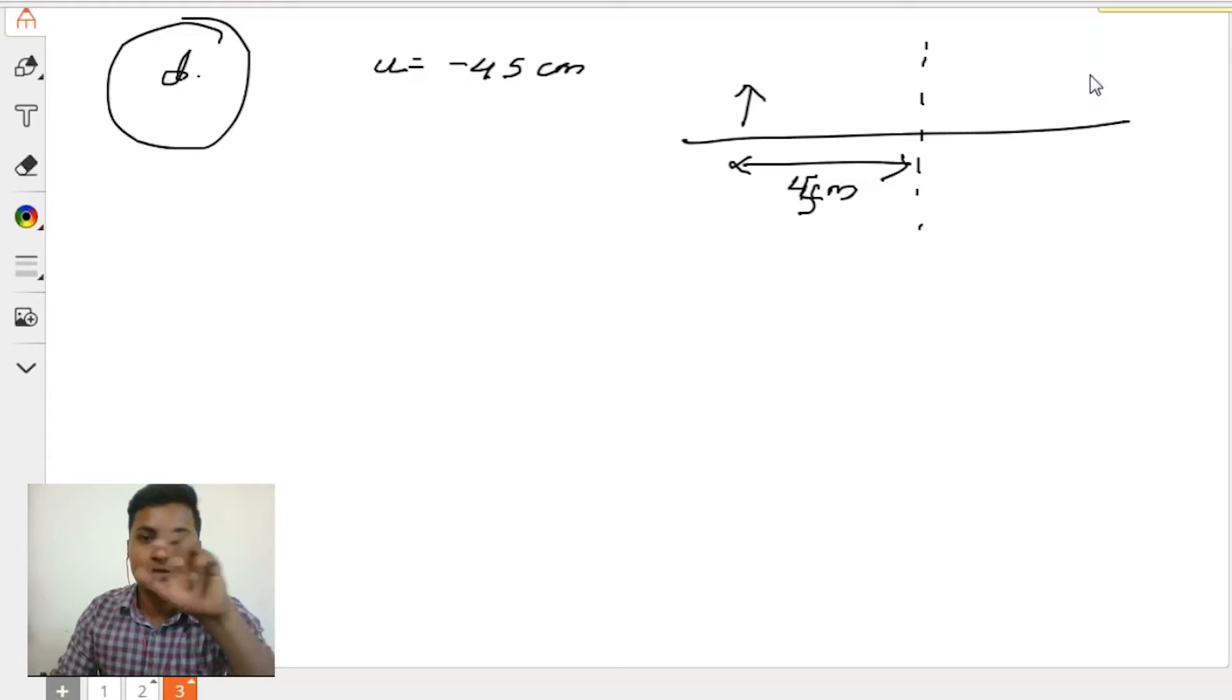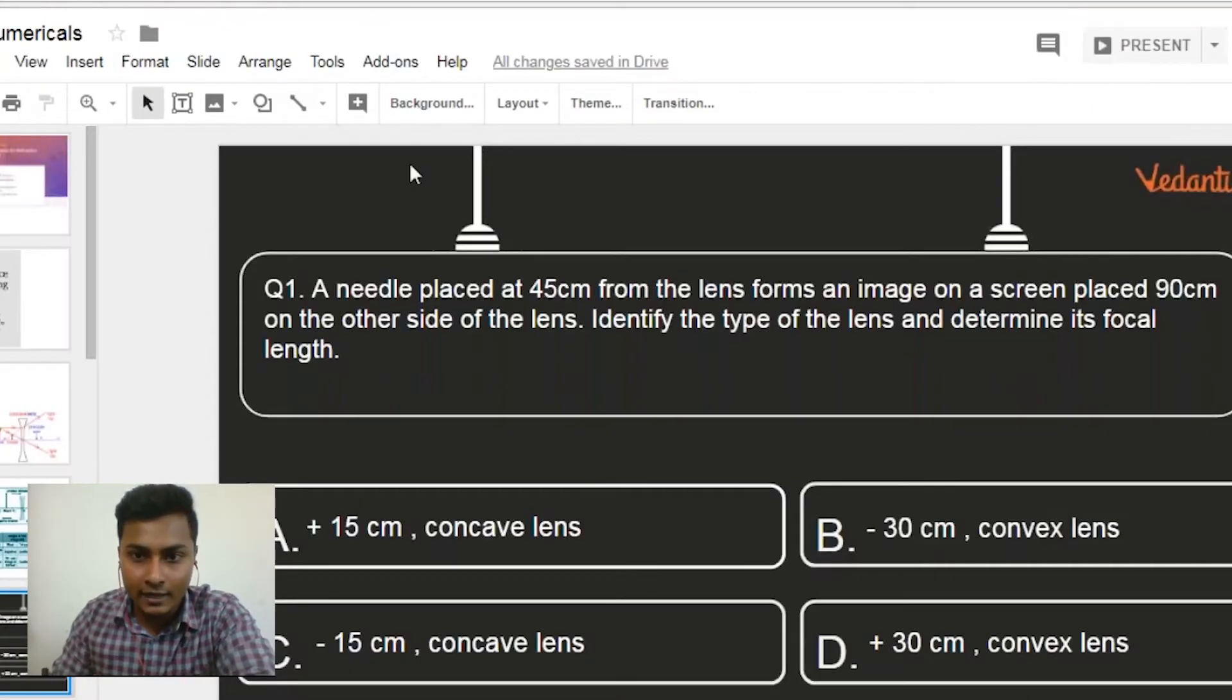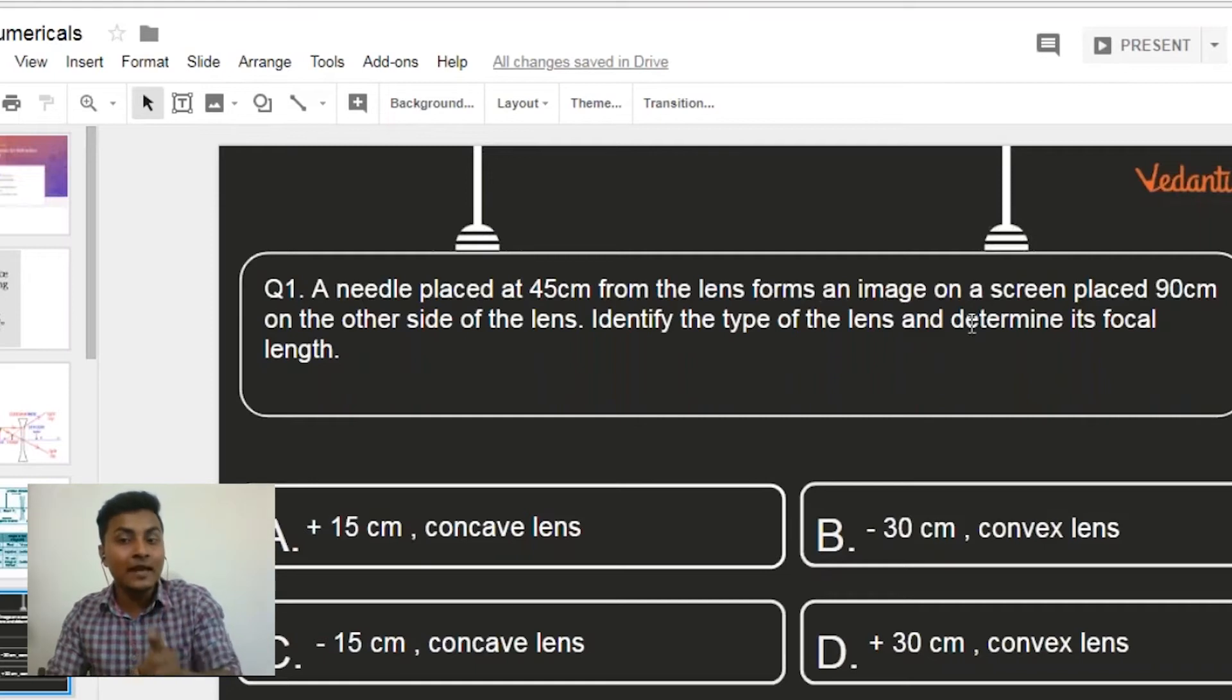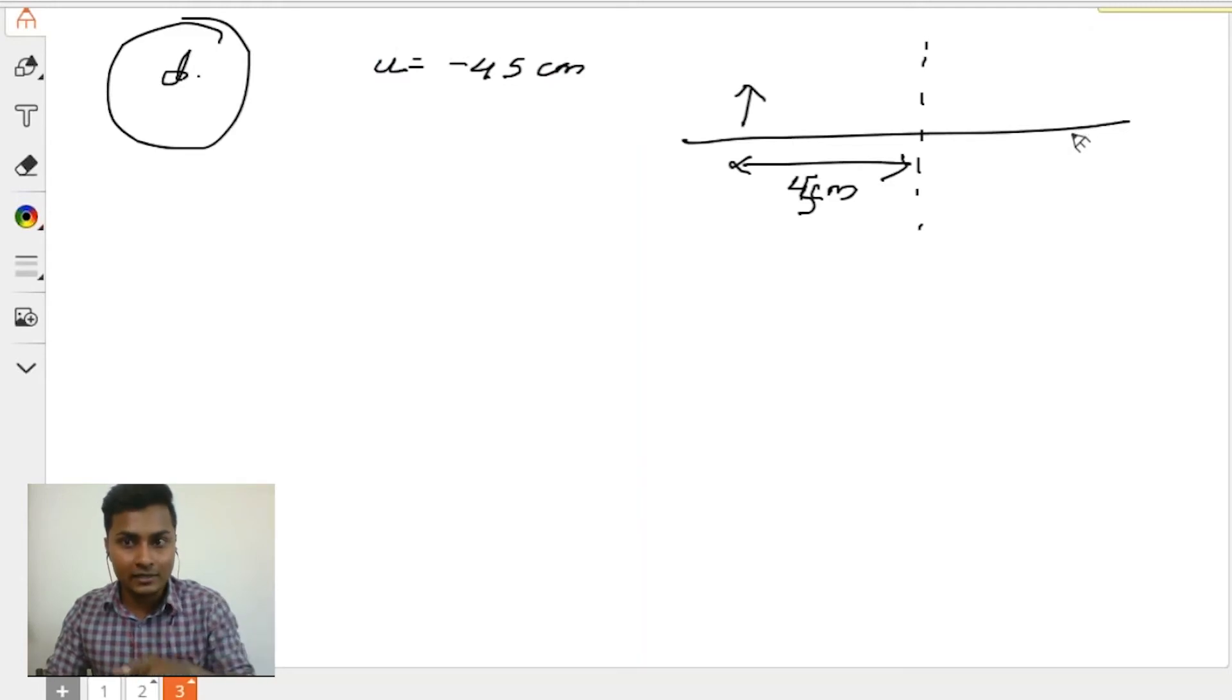What is the next profile given to you? It's stated a lens forms an image on a screen placed 90 centimeter on the other side of the lens. So that means it's going to form on the right hand side, here it is 90 centimeter. Now my question to you is, is there any scenario when I told you that a concave lens makes an image on the right hand side? No, it does not.